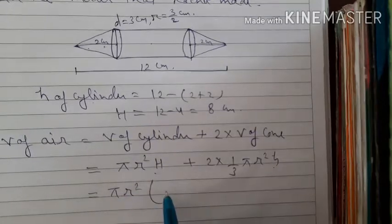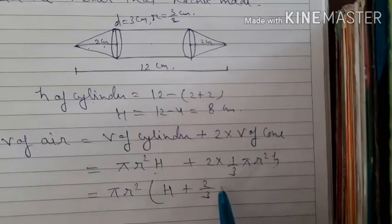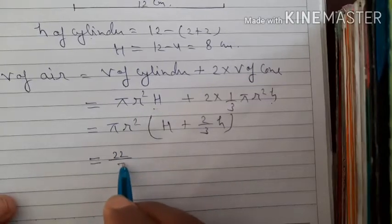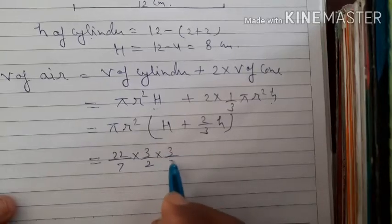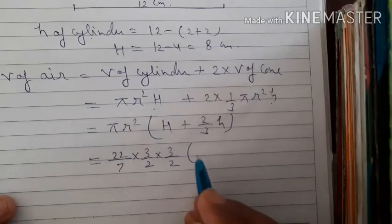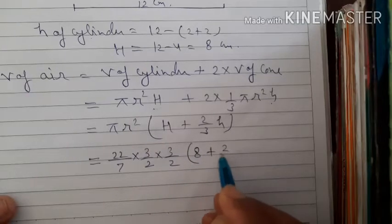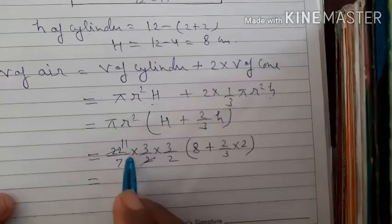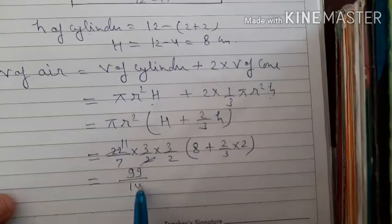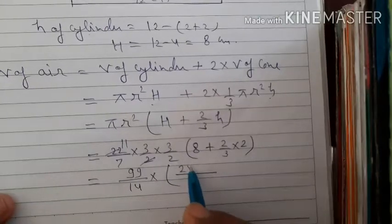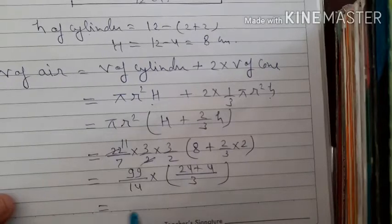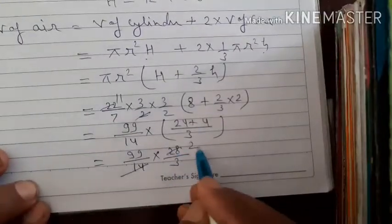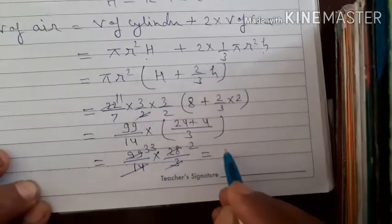Taking πr² common gives πr²(H + (2/3)h). Putting values: π = 22/7, r = 3/2, H = 8, h = 2. This gives (22/7) × (3/2) × (3/2) × (8 + 4/3) = (99/14) × (28/3). Simplifying: 14×2 = 28, 3×33 = 99, so 33×2 = 66.